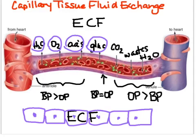This makes sense: on the arterial end we deliver oxygen, amino acids, and glucose that our body worked hard to digest. On the venule end we pick up carbon dioxide wastes and some water, take it back to the heart, which pumps it to the lungs where the carbon dioxide leaves.